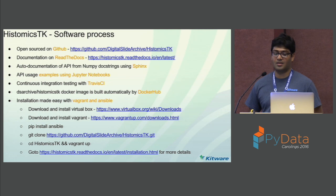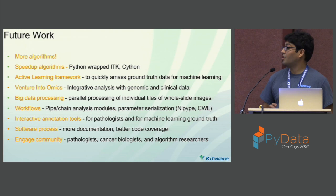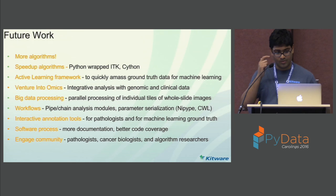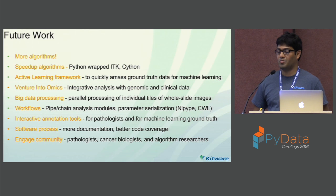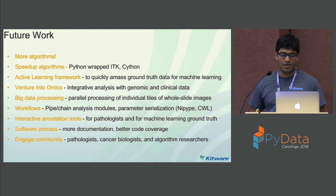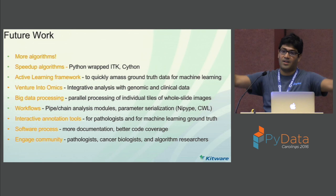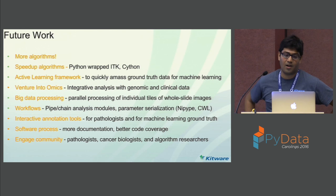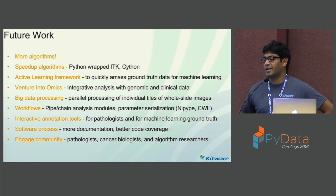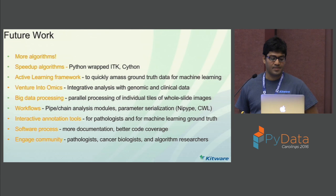These are all the future work we are planning. We'll probably make a release soon and will be adding more algorithms. We are looking into ways to speed up algorithms using Cython and Python-wrapped ITK. In the next year, we'll probably take up big data processing challenges — basically we want to parallelize the processing of individual tiles of these whole slide images, which are stored in a pyramidal fashion with images broken down into blocks at each level. We'll also be venturing into integrative analysis with genomic and clinical data.